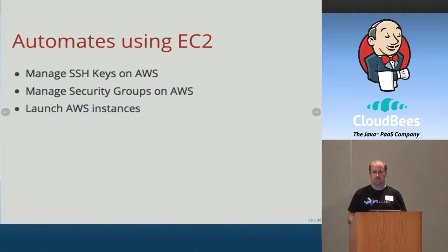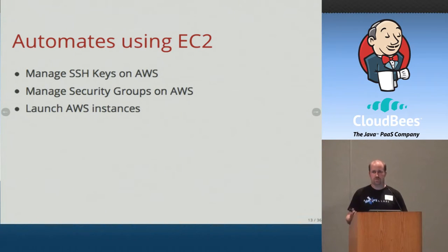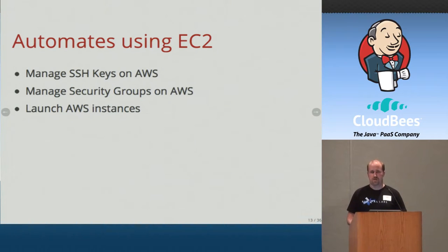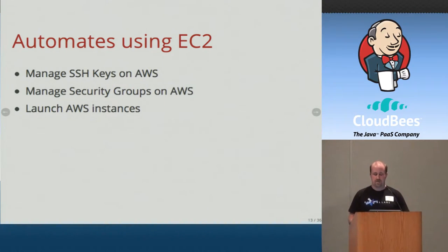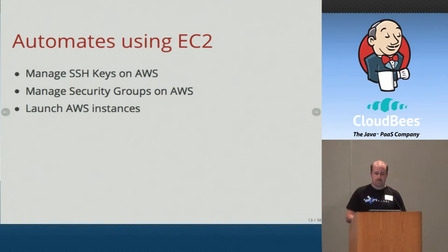It manages your security group — by default when you spin up a box on EC2, you can't do anything with it because you can't even get to it. You have to go into the security groups, which are much like a firewall, and open up the right ports. Lobot also actually launches the AWS instance — it has an AMI ID and instance size with defaults so you don't have to think about which type of box to set up. You just say 'I want a CI box, start server,' and off it goes.